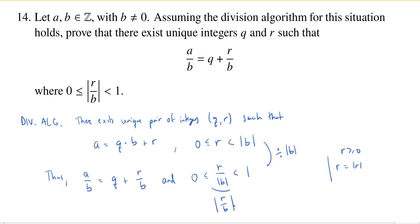That's all there is to it. Write down our definition for the division algorithm in this general situation. Divide by B, or the absolute value of B, and you get the result.